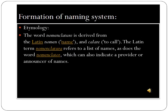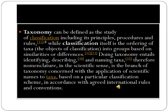What is the formation of the naming system in taxonomy? The naming system is known as nomenclature. The word nomenclature is derived from the Latin 'nomenclatura' or 'nomen,' meaning name. The Latin term refers to a list of names, and nomenclature can also indicate a provider or announcer of names. Taxonomy can be defined as the study of classification, including its principles, procedures, and rules. Nomenclature has very great importance in taxonomy, and we have studied it in a previous lecture, so we will not discuss it further here.